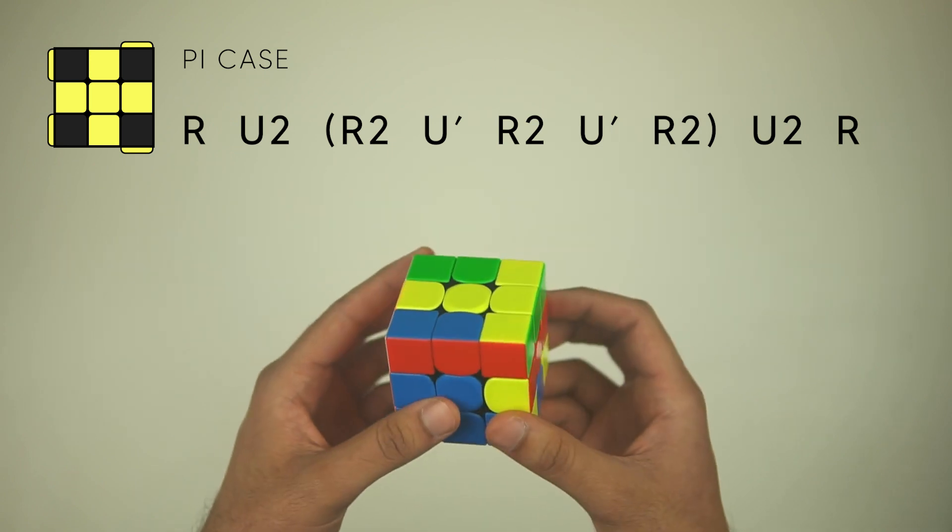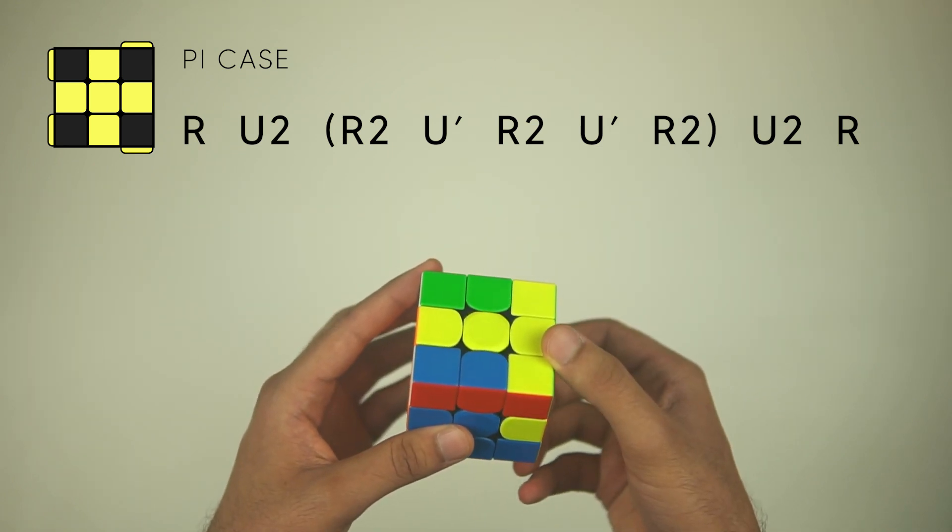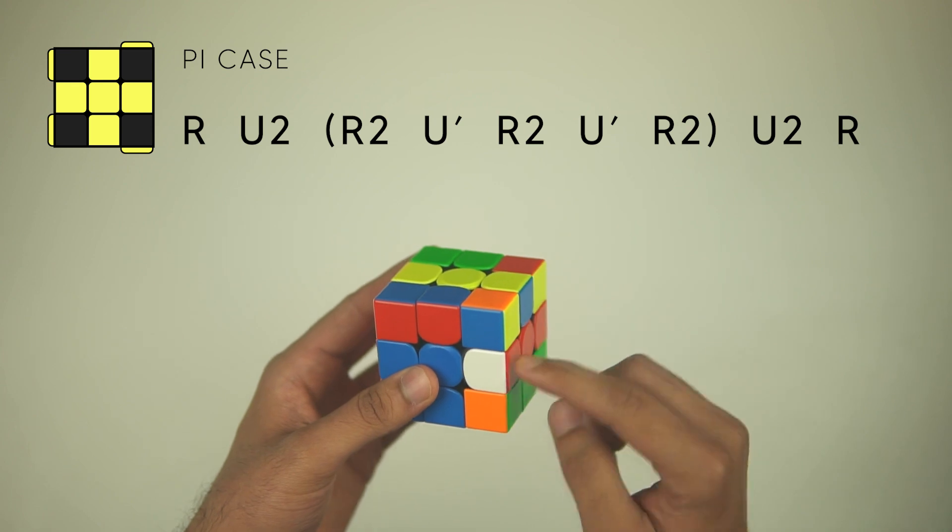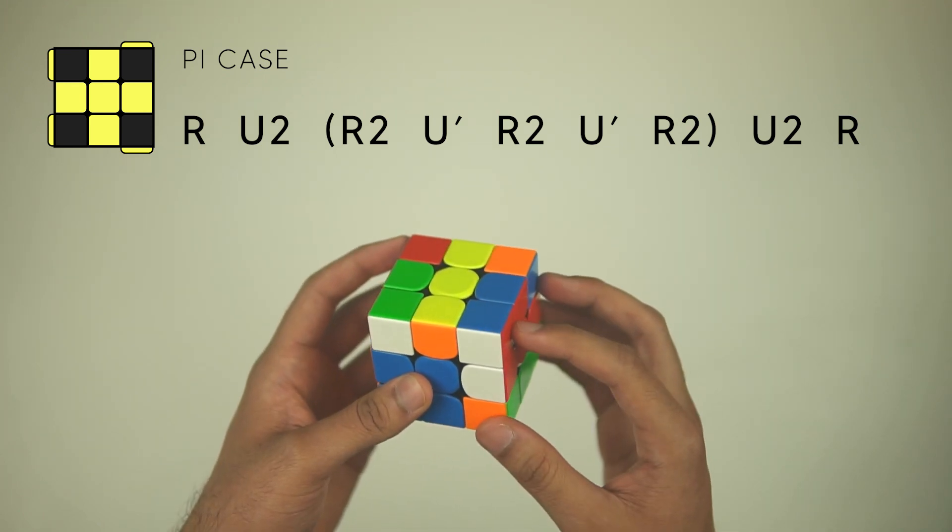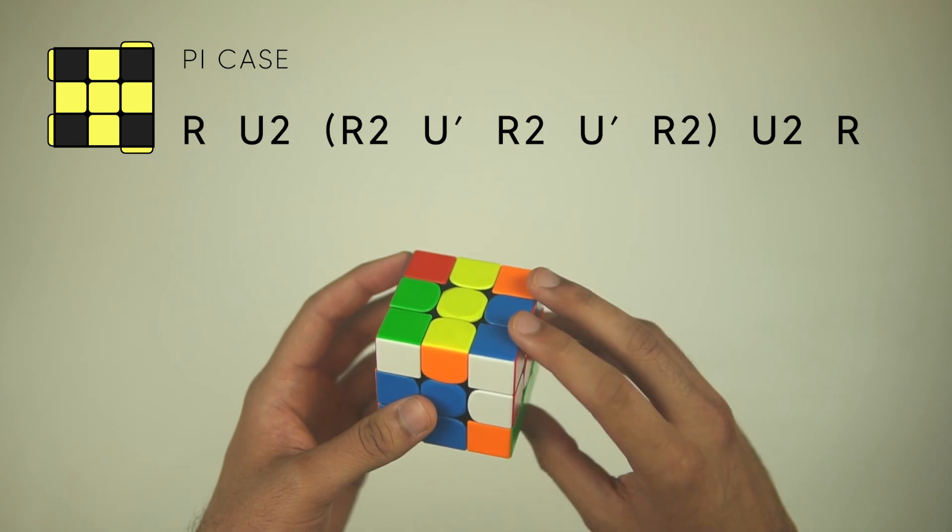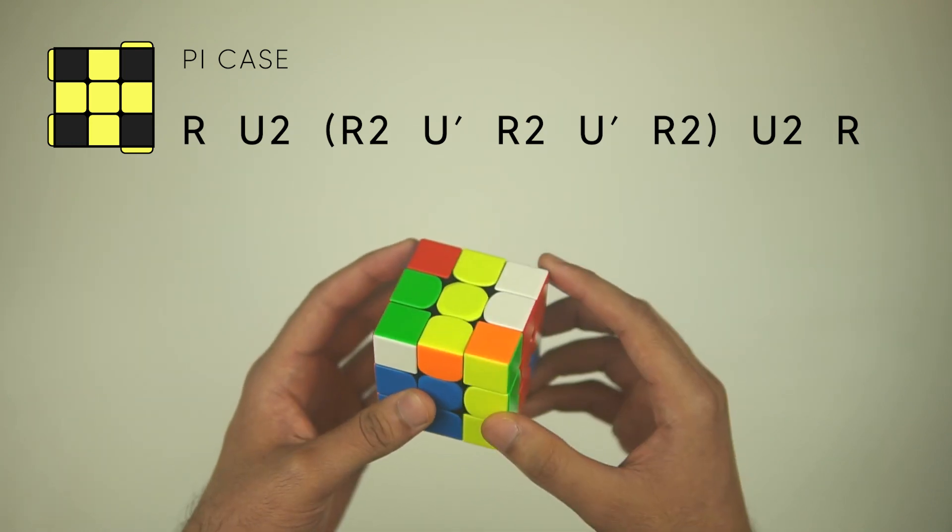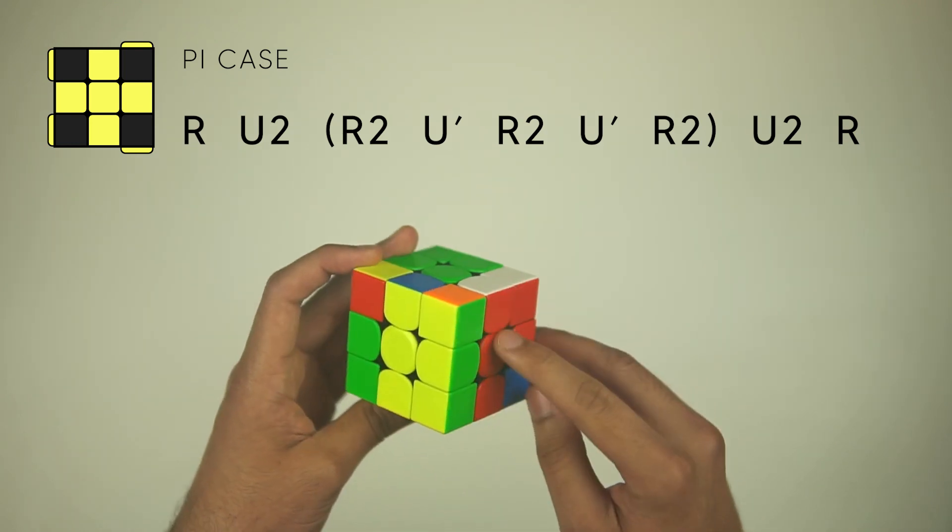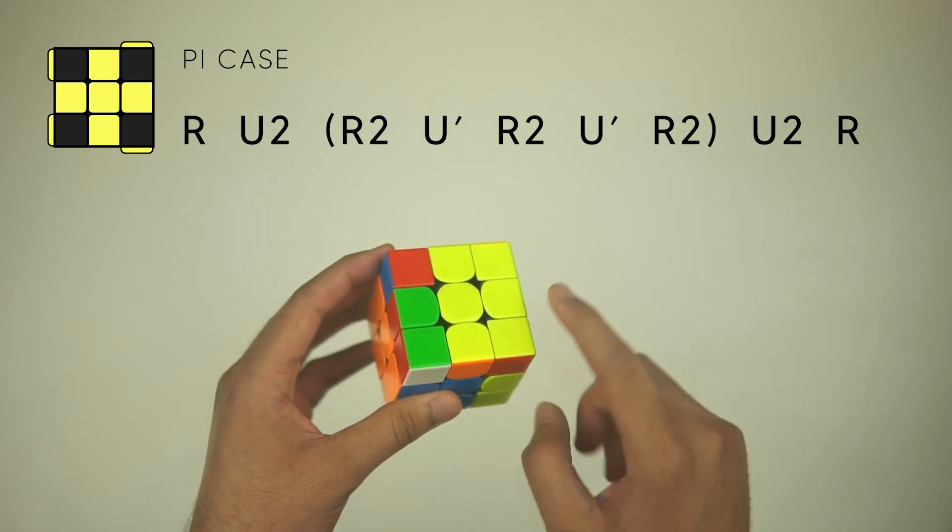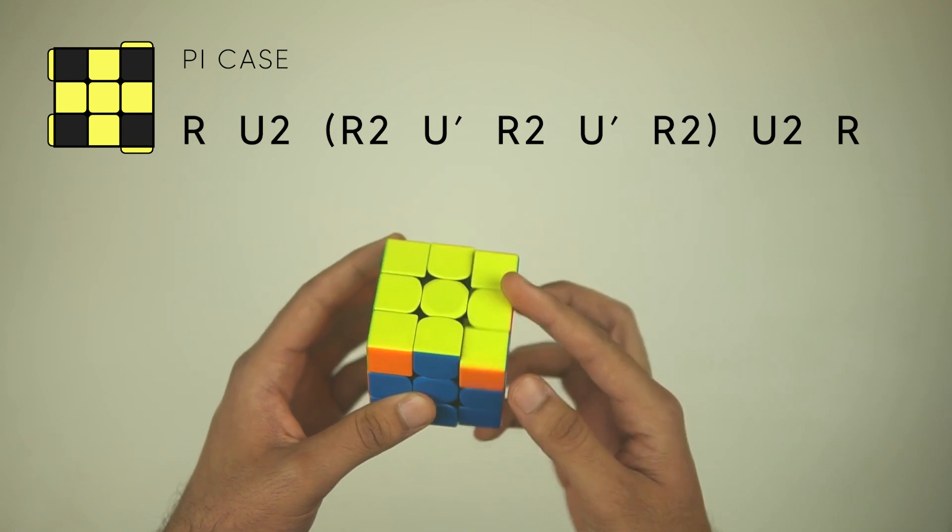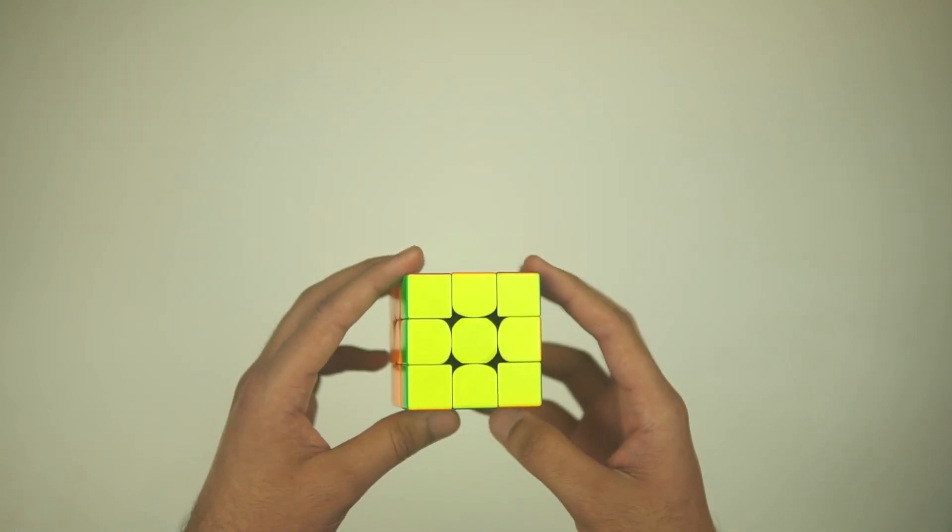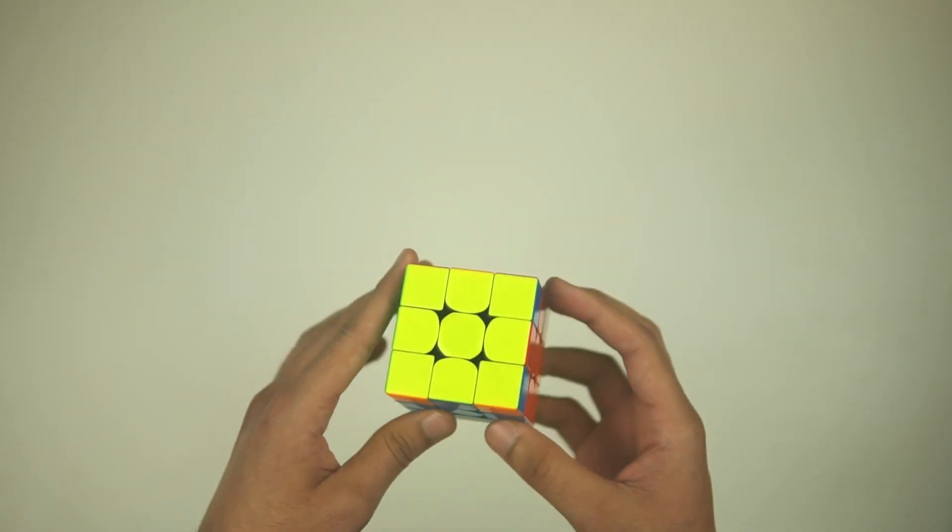And there's a single edge piece here, so we're going to do an R2 to bring this edge over. We're going to connect these F2L pairs with a U'. Now we want to do an R2, so that it moves this edge all the way to the other side again. Then we have to connect this F2L pair here with a U2, R. It's kind of a weird one, but there it is.